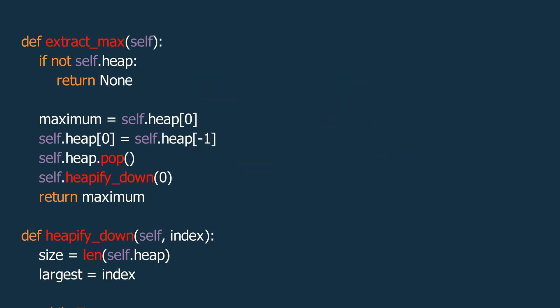Next, let's look at the code. First, we will start by defining the ExtractMax function. We start by checking if the heap is empty. If it is, we simply return, as there's nothing to extract.